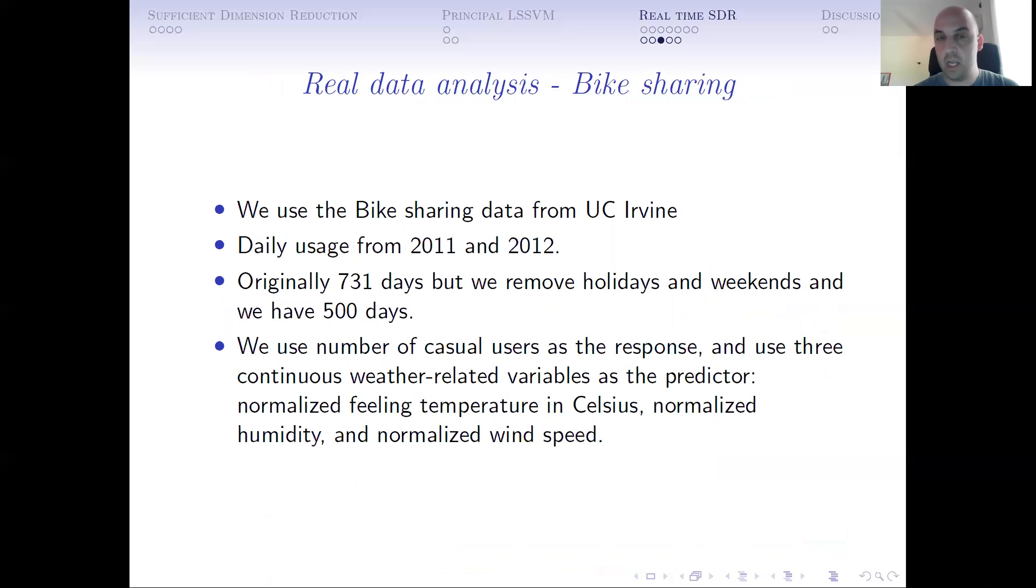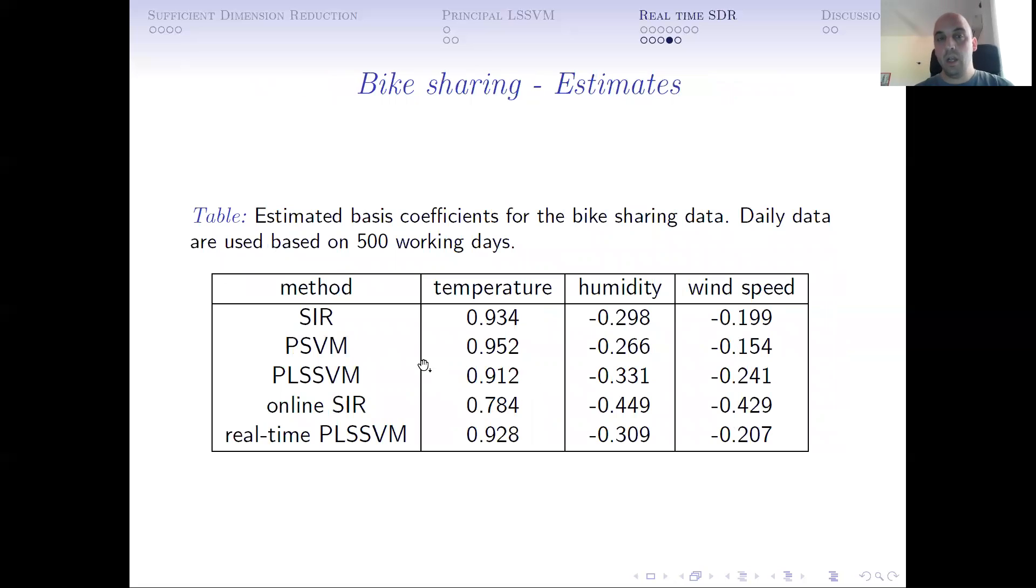There is some real data analysis using the bike-sharing data from the UC Irvine dataset. It's daily usage of 2011-2012. We keep 500 days because we remove holidays and weekends. Casual usage is a response, and we have three predictors: temperature, humidity, and wind speed. We use the methods that use the whole data of 500 days. This is the estimates we get for the central subspace if you use online SIR and real-time least-square support vector machine. What we do is we use the first 100 days, and then we update one by one. The rest 400, and this is the final update for least-square support vector machine. This is the final update for online SIR. You see, the four of them are very close. This one is a bit off.